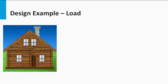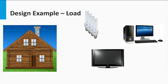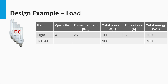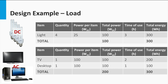Consider a house that is to be powered independent of the electric grid by means of a standalone PV system. Let's assume that three simple kinds of loads are required to be powered: lights, TV, and desktop computer. The lights are DC powered while the TV and the desktop computer are AC powered. The required quantities of each kind of load along with the duration of usage are also mentioned. Both the DC loads and the AC loads require a total energy of 300 Wh each per day.